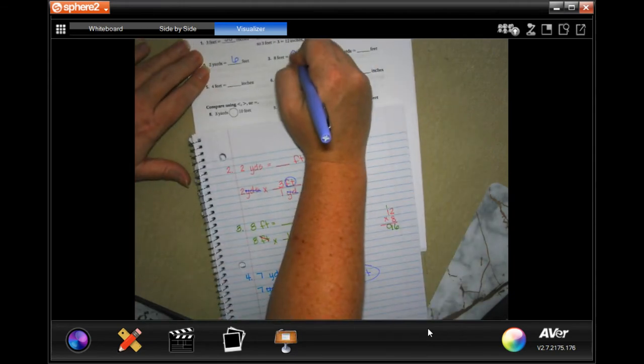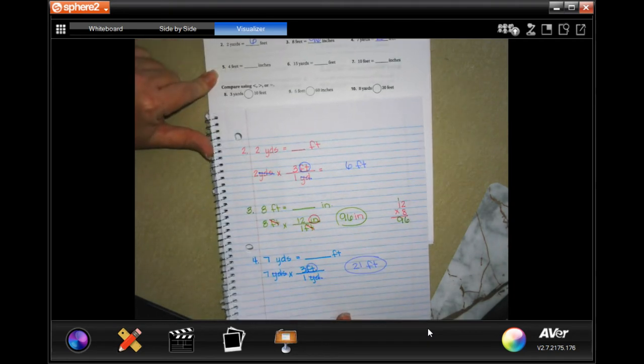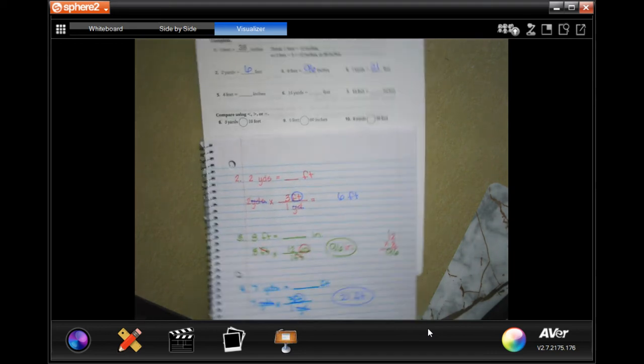You should have 96 here, and you should have 21 here. You guys do 5 through 7. You totally can.